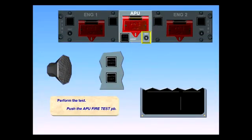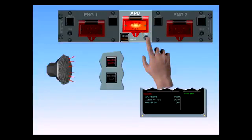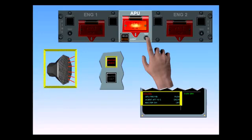Perform the test. Push the APU fire test push-button. The APU fire switch illuminates red and the squib and discharge lights illuminate. If AC power is available, the master warning lights and an APU fire warning on the ECAM are illuminated, and the continuous repetitive chime, CRC, sounds.